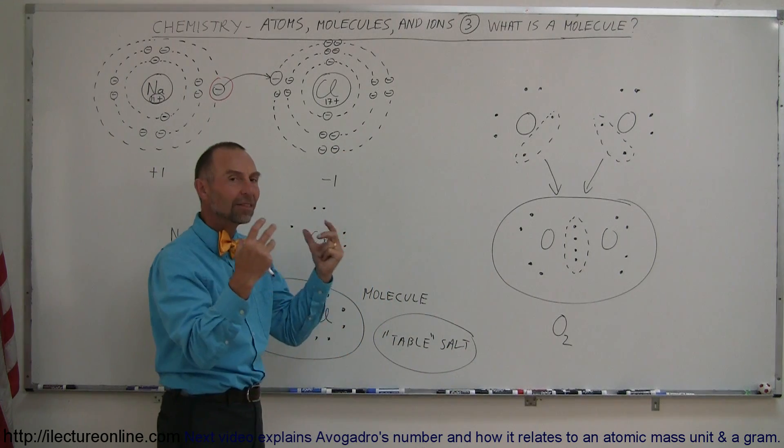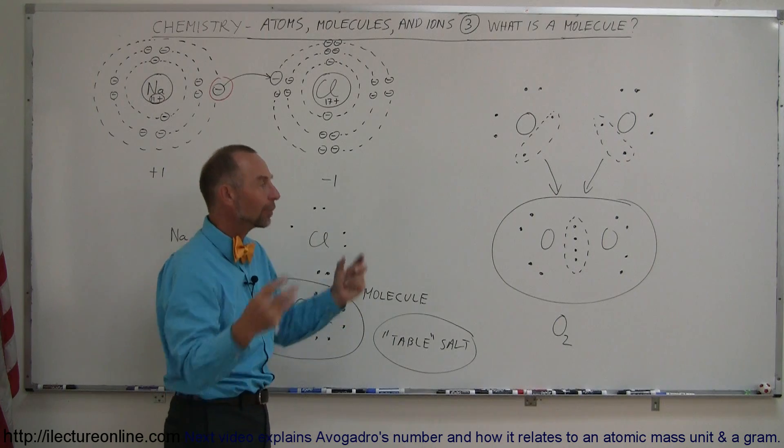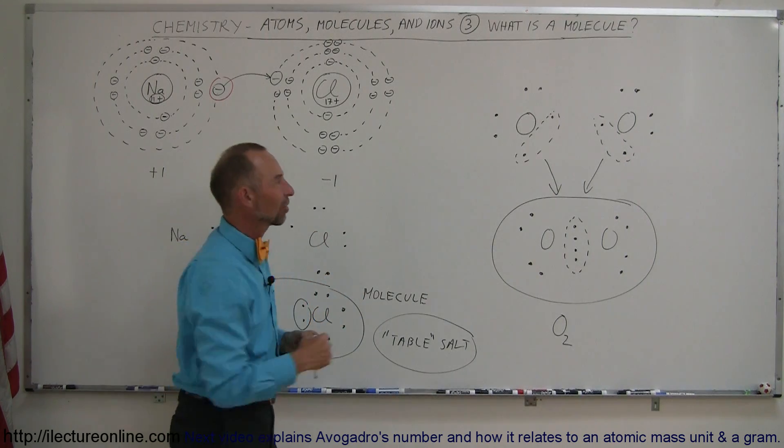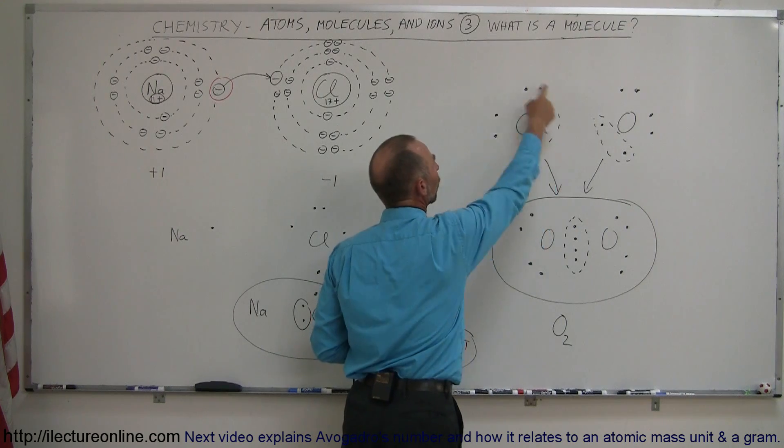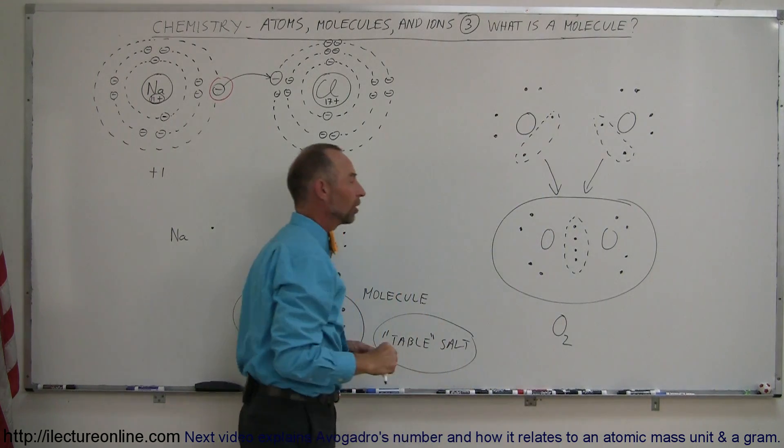Oxygen atoms tend not to be on their own, they tend to want to bond with other atoms to gain those two extra electrons, which they so badly need to try to form a total of eight in their outer shell or outer level.